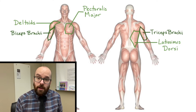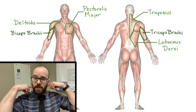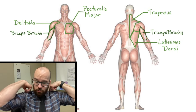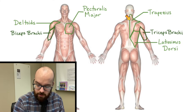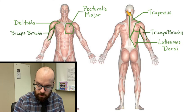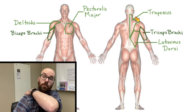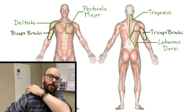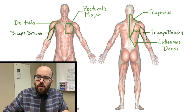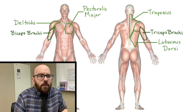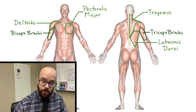Another important shoulder muscle is the trapezius, located in the neck and upper back region. Its origin is the thoracic and cervical spine as well as the base of the skull, and its insertion is the clavicle and scapula. The trapezius is all about moving the scapula — rotating it, raising it, and lowering it.